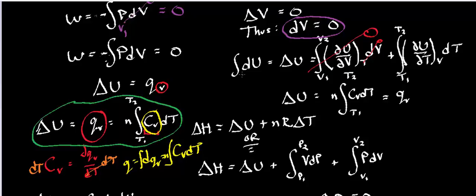Basically, if I want to find the integral of dU, which is just delta U, what I do is I take the derivative, the partial derivative of U with respect to V at constant T, dV, from V1 to V2, plus the partial derivative of U with respect to T at constant V, dT, from T1 to T2.